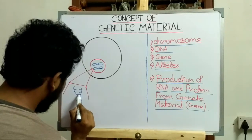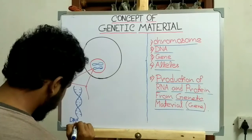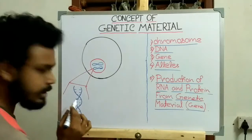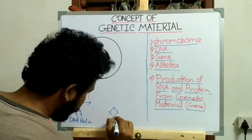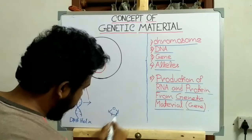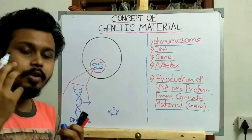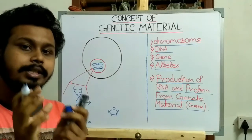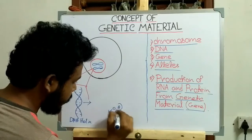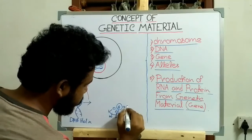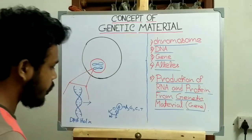This is the double-stranded DNA structure, which is known as the DNA helix. Each DNA molecule is composed of a deoxyribose sugar — here at the 2-prime carbon, the hydroxyl group (OH group) is removed, and that is why it is called deoxyribonucleic acid. The nucleotide bases present here may be adenine, guanine, cytosine, or thymine.